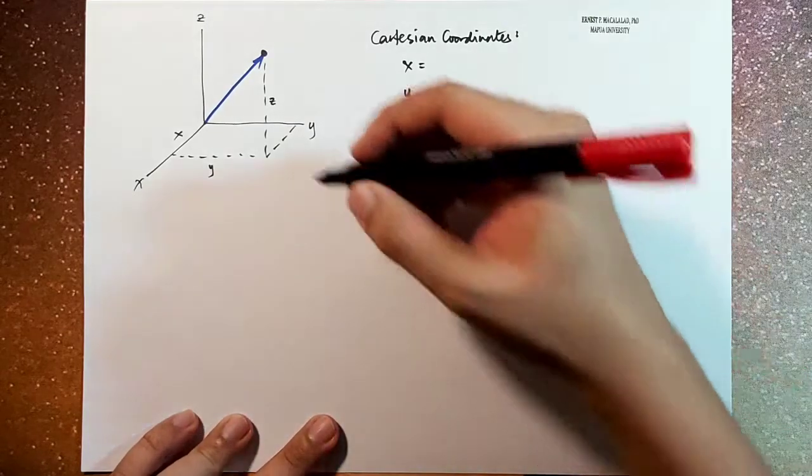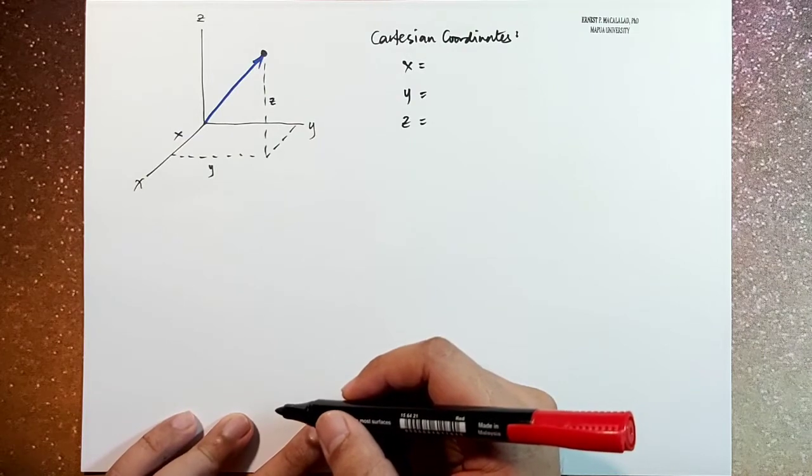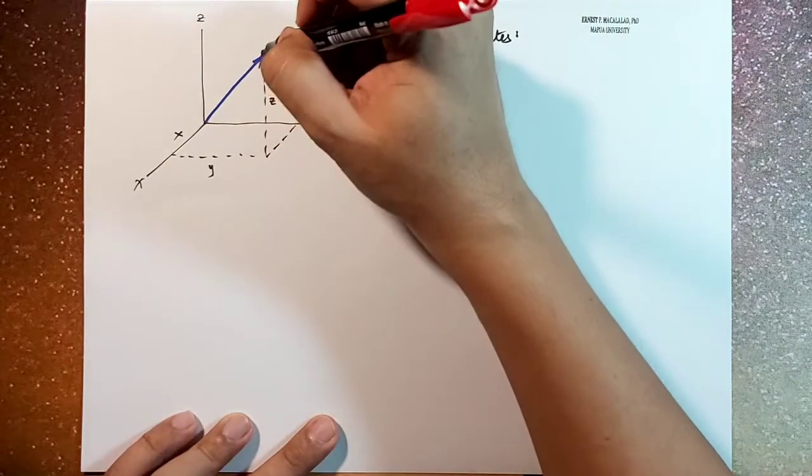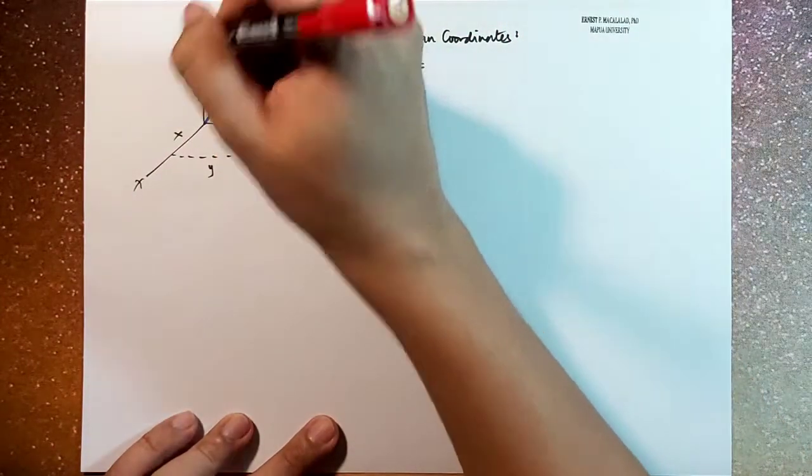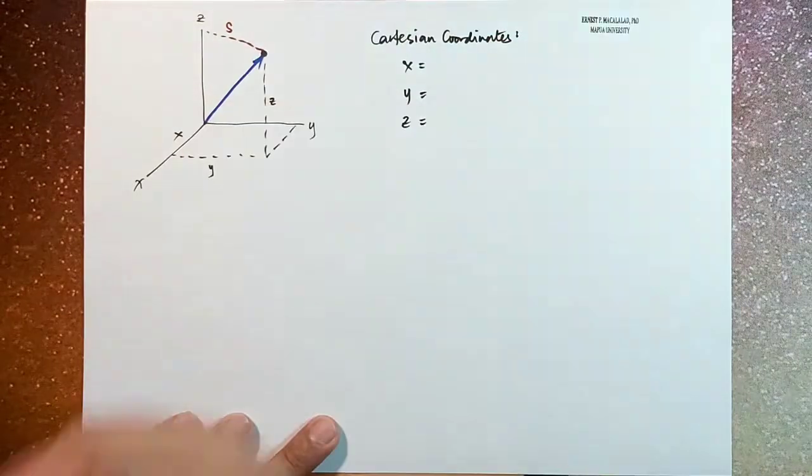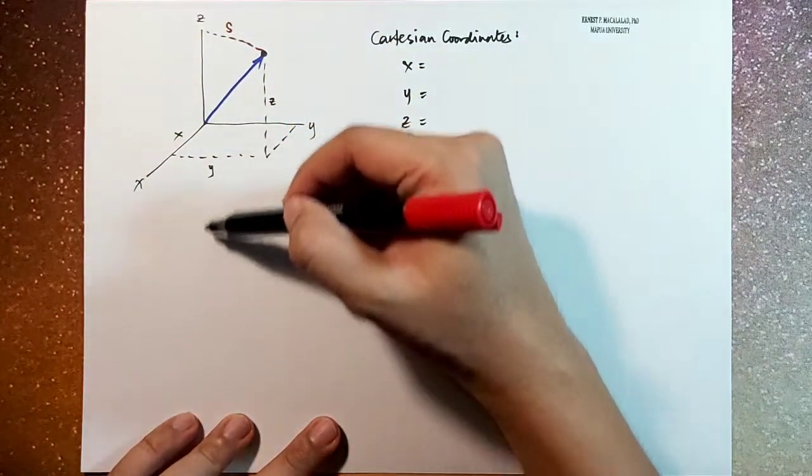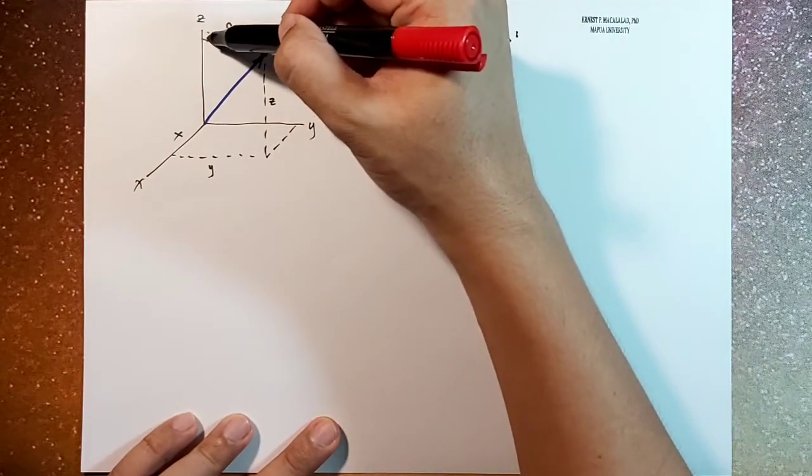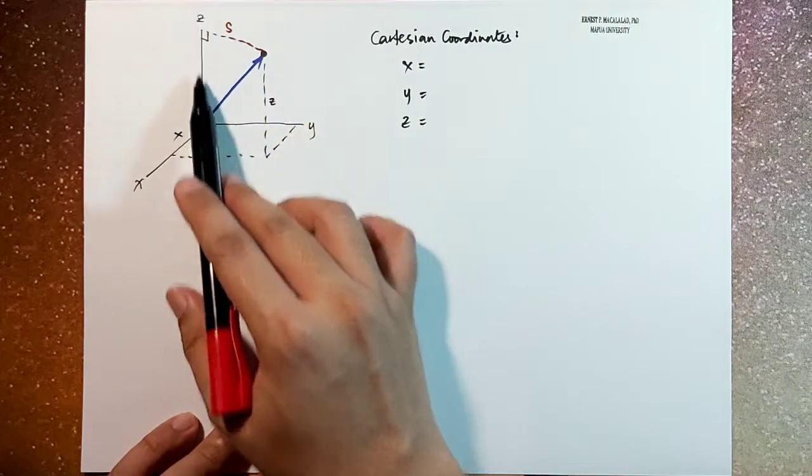First is the s component. The s component is the length or the shortest distance between your position vector to your z axis. So this is your s. So if this is an axis, this s is the perpendicular distance from your point to the z axis.